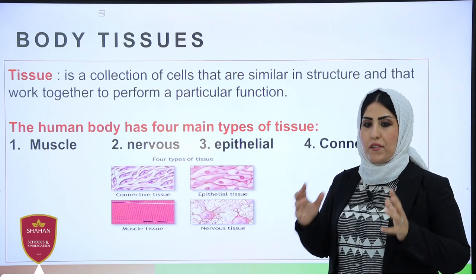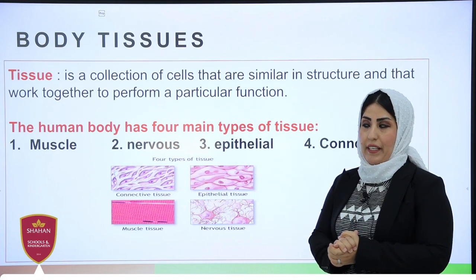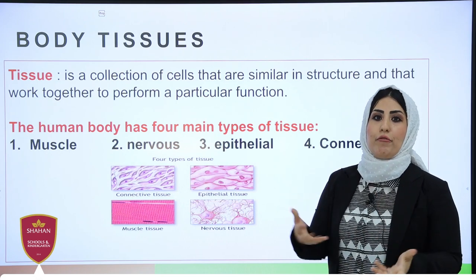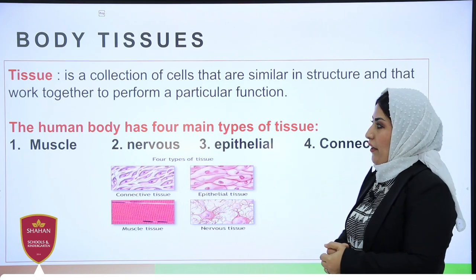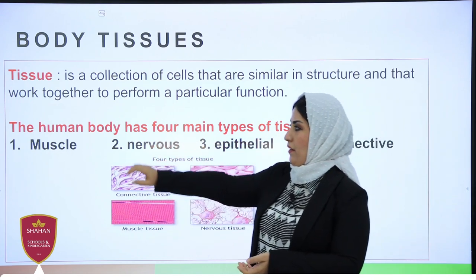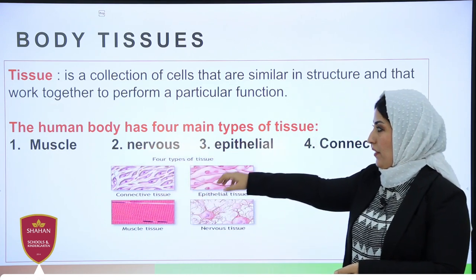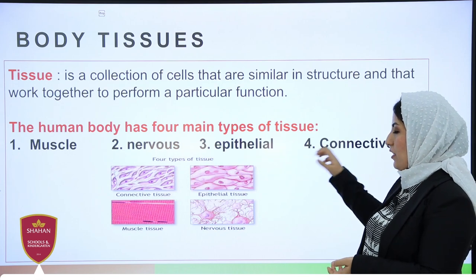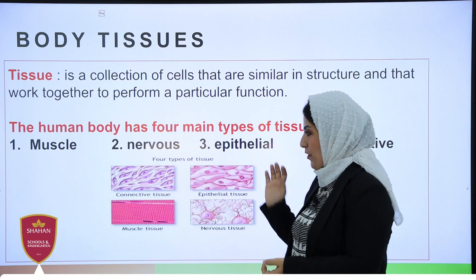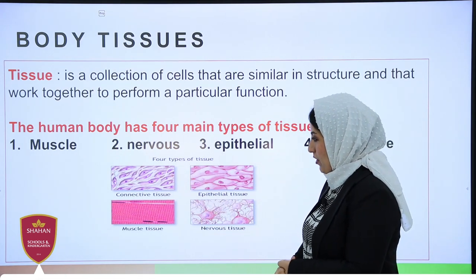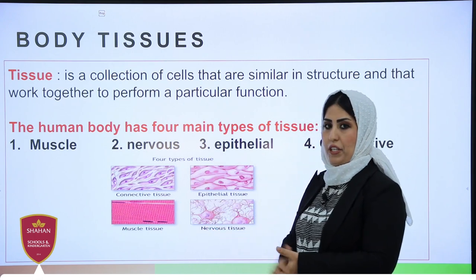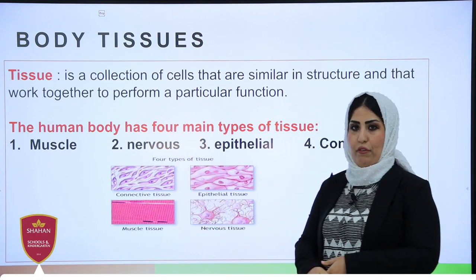A group of similar cells produces a tissue, and each tissue has its own specific function in the human body to create an organ. So we have four types of tissues in the human body: number one is muscle tissue, nervous tissue, epithelial tissue, and connective tissue. As we can see here, each of them has their own structure, function, and different shape, and based on their shape they also have their own function.